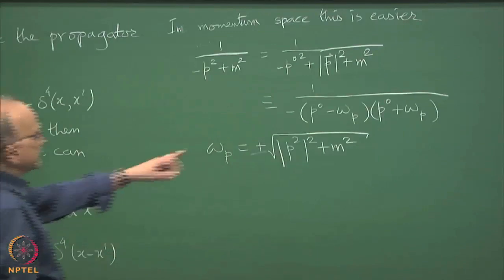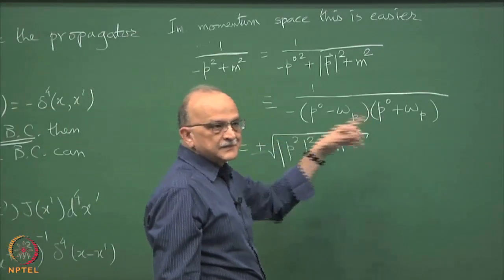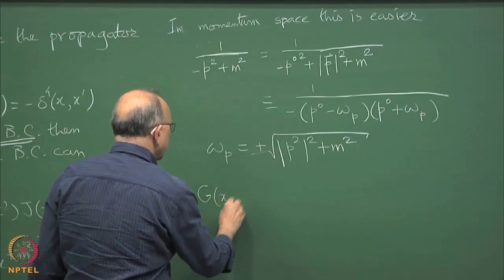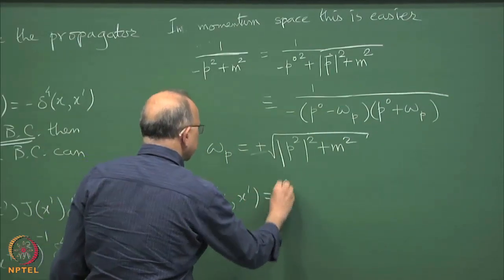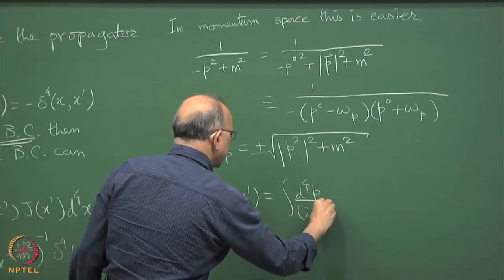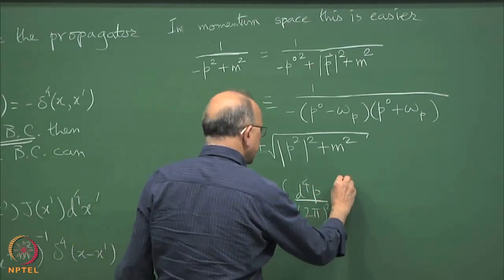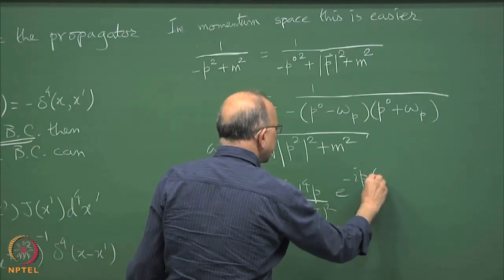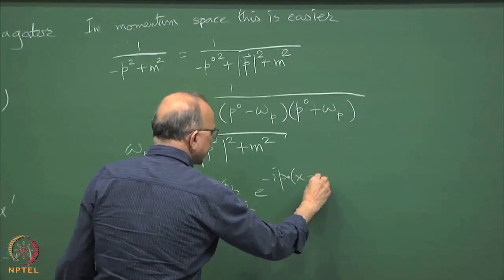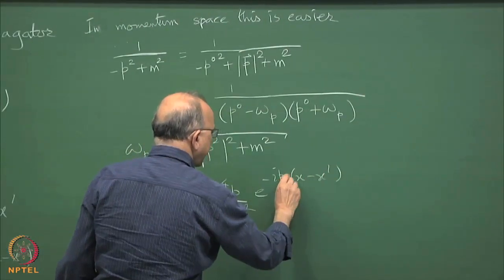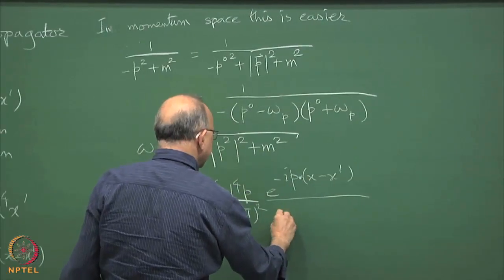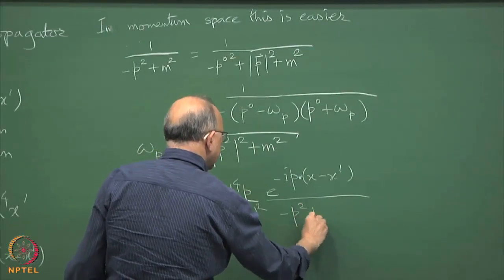This thing is of course in detail equal to p0 square minus p0 square plus p square plus m square, which we write as equal to 1 over, and I take out a minus sign, p0 minus omega p and p0 plus omega p, where omega p I simply define to be equal to the positive square root of mod p square plus m square.